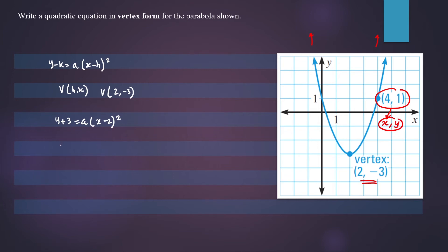So we have y plus 3, and y is 1. So we have 1 plus 3 equals a times (x minus 2), and x is 4. So that's 4 minus 2 all squared.